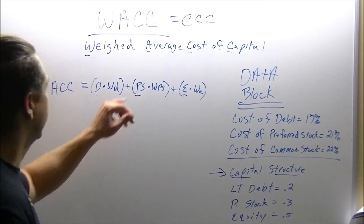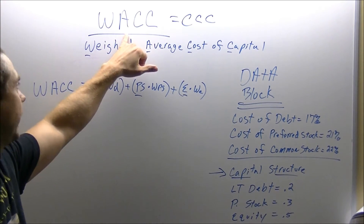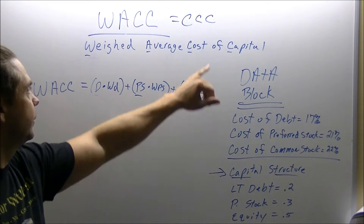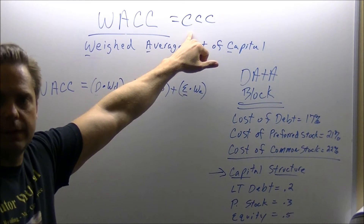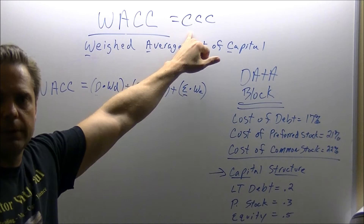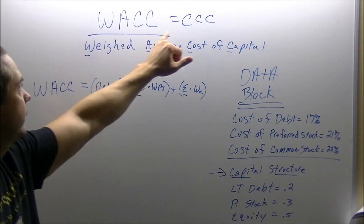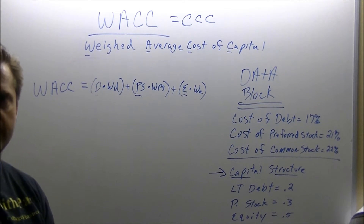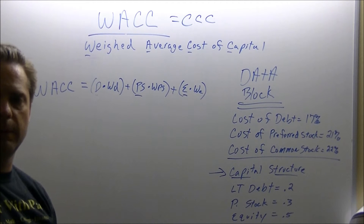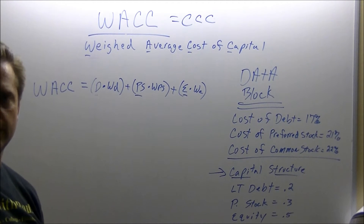The weighted average cost of capital is also referred to as a WACC, or it can also be referred to as a CCC, which is a corporate cost of capital. Either term is going to mean the same, which is how much a company pays for the money that they use or the money that they borrow.